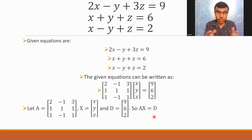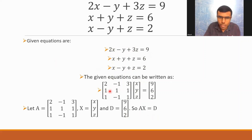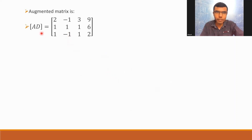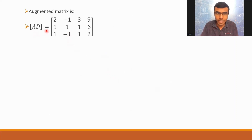Now, to solve it using the Gauss-Jordan method, I need to know something else: the augmented matrix. I need to frame it. It's nothing complicated — I'm going to club matrix A and matrix D together and write it to the left. So it would appear something like this. The augmented matrix [A|D] equals this.